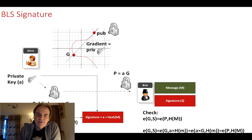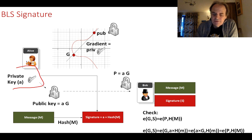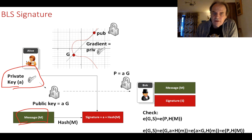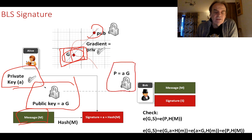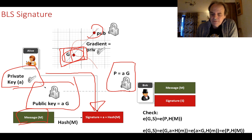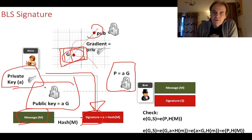Here is how we actually sign with BLS signatures. Alice generates a 256-bit random value as her private key. She then creates her public key as A times the G point, which will be shared to prove the signature. She takes the message, computes a hash of the message (256 bits), and multiplies that hash value by her private key to get the signature. The signature will be a point on the elliptic curve — we may need to adjust slightly to ensure it fits on the curve.